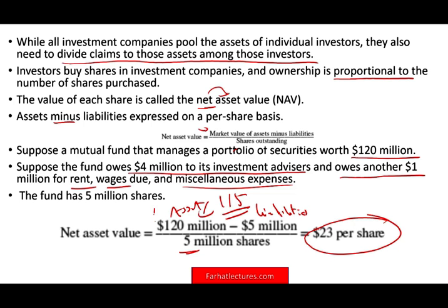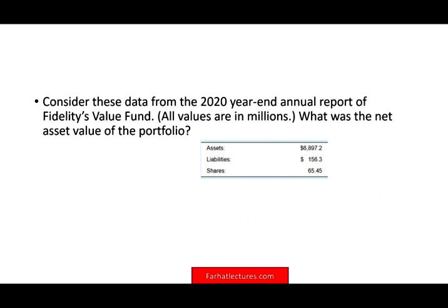If the asset value goes up — if those investments increase in value — the net asset value for each individual will go up as well. Conversely, if liabilities go up, NAV will go down. If the number of shares outstanding goes down, NAV will go up.